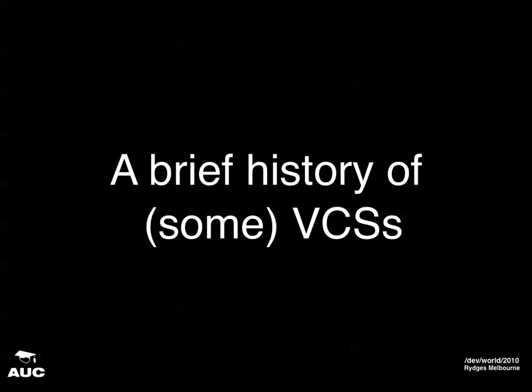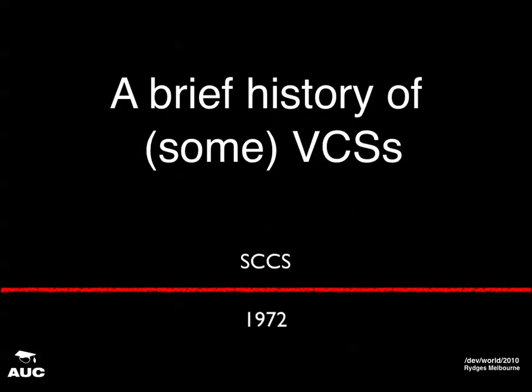A quick history of certain version control systems. There are many version control systems, but I'll just talk about some of the ones in the chain that led to Git. First up was SCCS, which came in 1972, developed at Bell Laboratories — not sure if it was really the first version control system, but one of the first. Next up was RCS, done at Purdue University. The idea behind that was to be a more evolved alternative to SCCS and also free. RCS is now part of the GNU project, but it hasn't been maintained since about 1995.